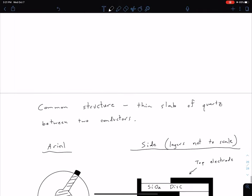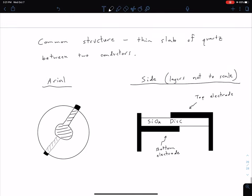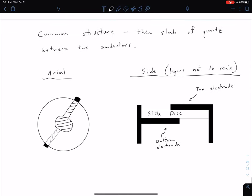Lastly in this video, let's take a look at a common structure. One common structure is to have a thin slab of that crystalline quartz between two conductors. I have two views here. On the left we have an aerial view, and on the right we have a side view. On the side view I've noted that the layers are not to scale.